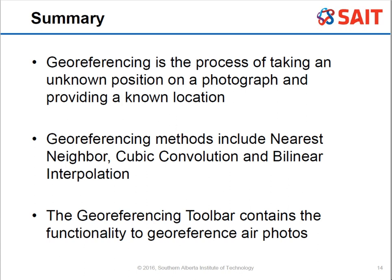Bilinear interpolation takes a weighted average of the surrounding pixels touching the single screen pixel and applies a bilinear interpolation calculation. Cubic convolution is more complex — it takes about 16 surrounding pixels, converts them to the frequency domain, performs multiplication there, then converts back to the spatial domain to produce a value.